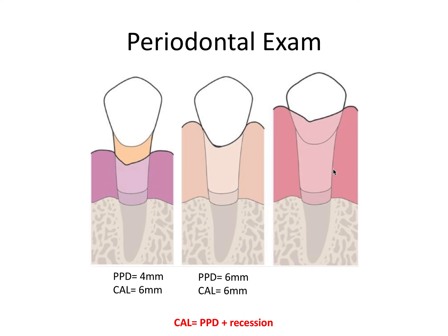In the third example, there's swelling of the gingiva with almost negative recession. The probing pocket depth from gingival margin to the base of the pocket is about nine millimeters. But the CEJ and base of the pocket are in the same positions as the other examples, so the CAL is still six millimeters. Using the equation: nine millimeters PPD plus negative three millimeters recession equals six millimeters CAL — it's a bit more roundabout but the equation works for all three examples.